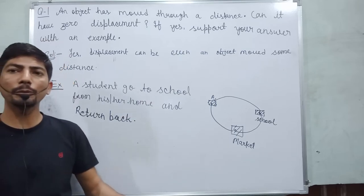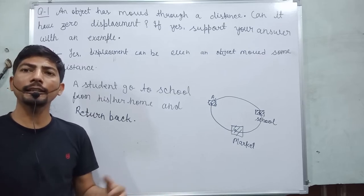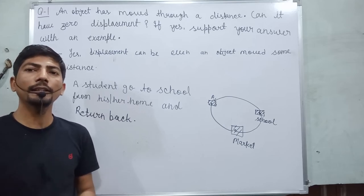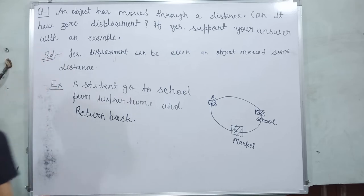So in this question, an object moved from their initial position and finally they reached the same position. In this case, the displacement will be zero but distance traveled by the object. So write down.